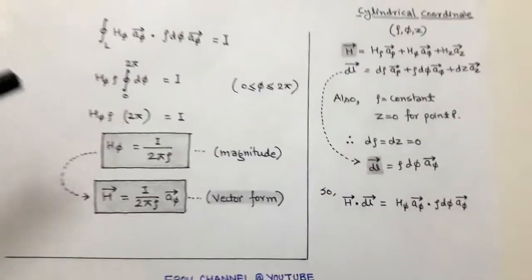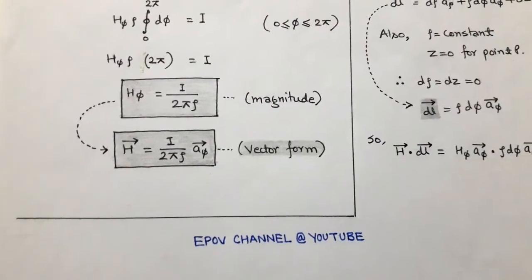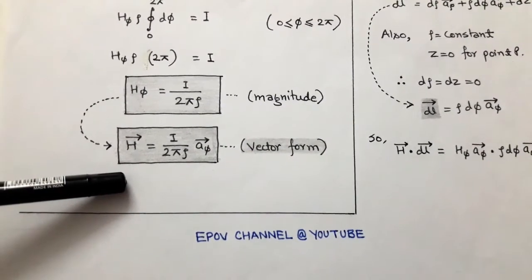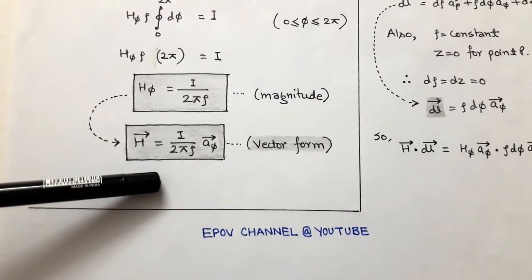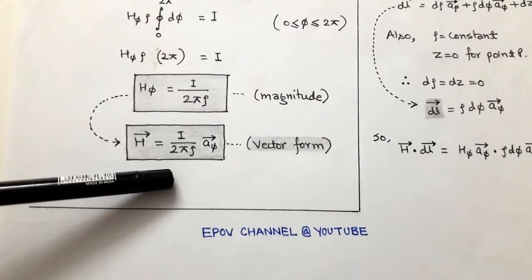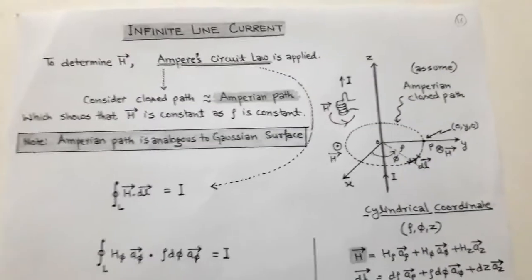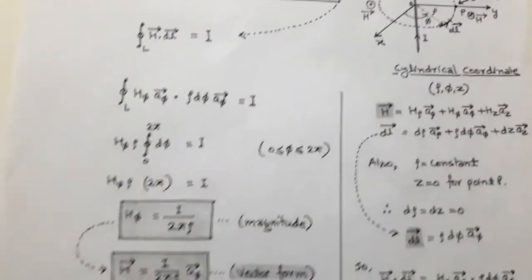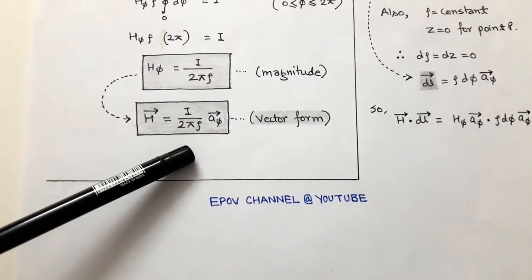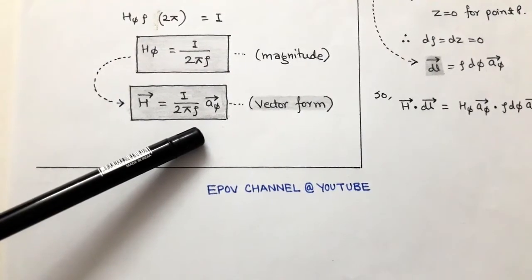The magnetic field intensity has magnitude I upon 2 pi rho and its component is along the phi direction. In vector form, H vector equals (I / 2 pi rho) unit vector phi. This is the magnetic field intensity due to infinite line current situated on the z-axis, with current flowing in the positive z-direction. We can apply Ampere's circuit law due to the symmetrical distribution of line current, and this result is the same as that obtained using Biot-Savart's law. Since the current distribution is symmetrical, Ampere's circuit law makes it easy to determine the magnetic intensity H at any point P.